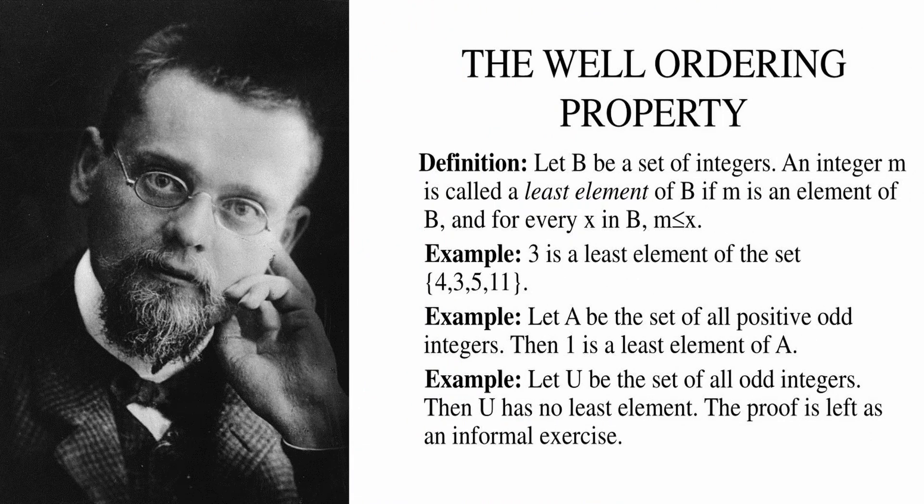But in 1904, Ernst Zermelo attempted to prove the well-ordering theorem — the statement that every set can be well-ordered, meaning every subset has at least a least element. To make his proof work, he had to assume something not provable from existing axioms: the axiom of choice. That moment formalized the axiom of choice as a distinct assumption, and it split the mathematical world. So, if it's so obvious, why the controversy? Because the axiom of choice allows for existence without construction — it says something exists without providing a method to find it. And once you accept that, you get consequences that are mathematically consistent but deeply unintuitive.